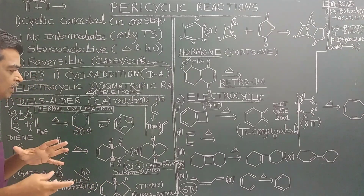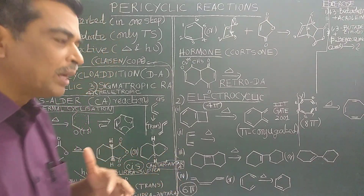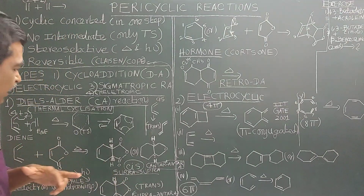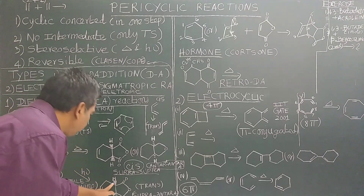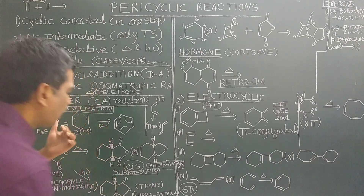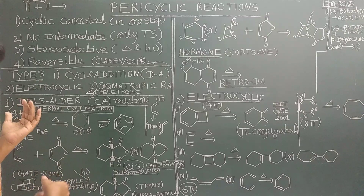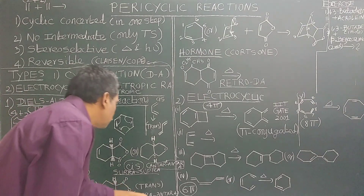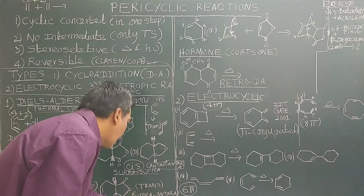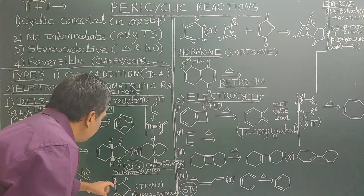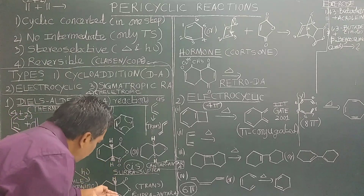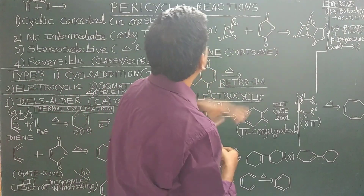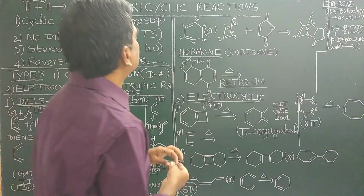In the presence of heat, the product is one isomer, and in the presence of light, the product is a different isomer — because with one mode there is supra-supra attack, and with the other there is rotation and attack from the bottom, giving supra-antara.